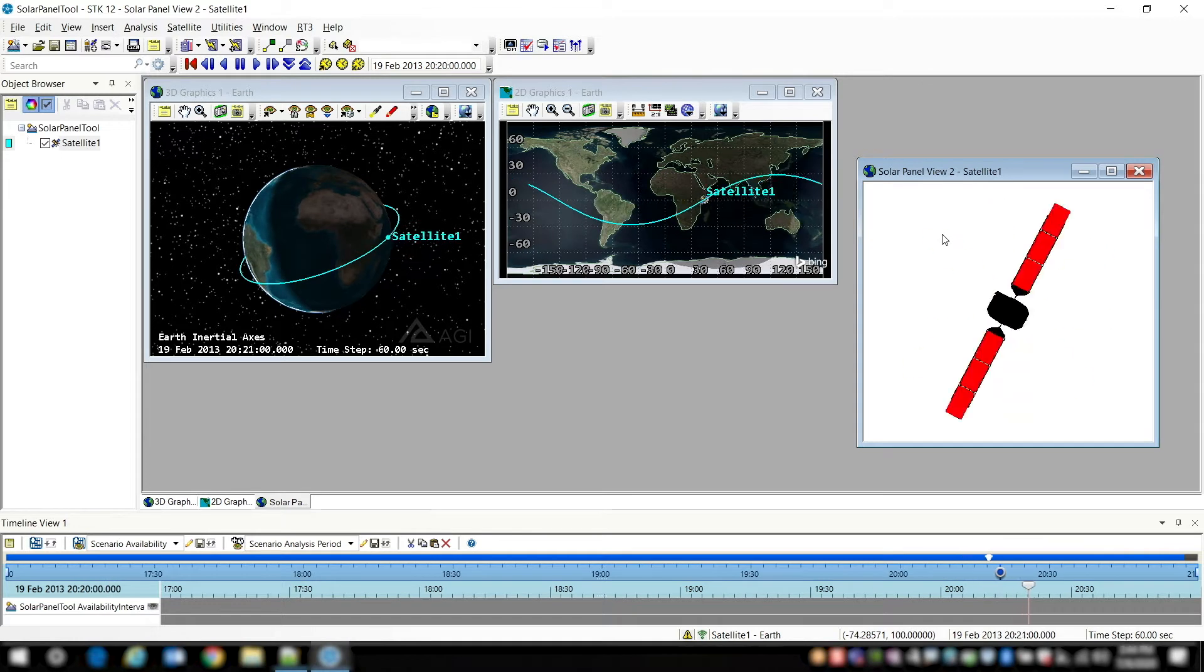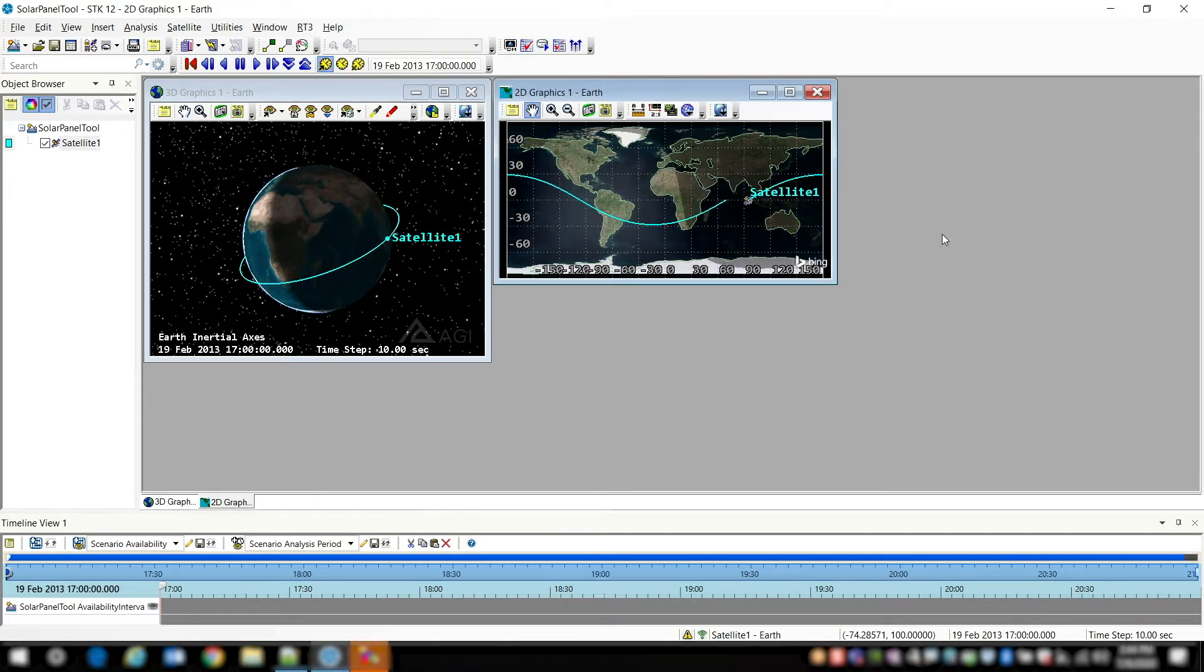And this window is a view from the sun's perspective and it's calculating the solar panel tool based on the pixels that it's collecting from the graphics card. And that's how it works.